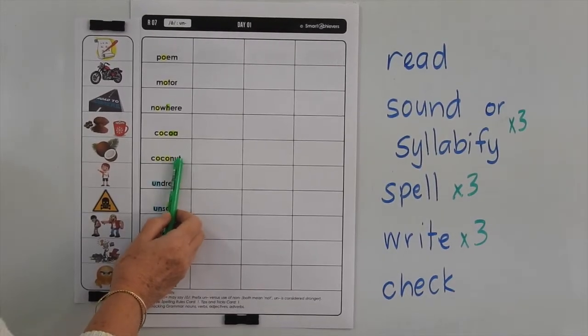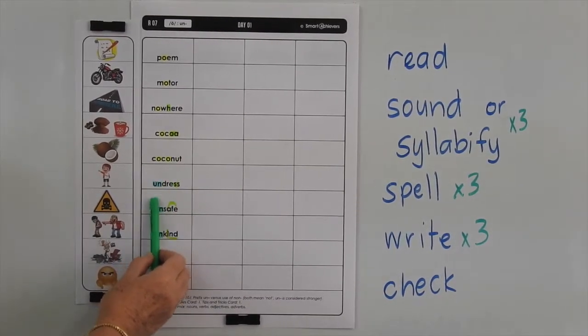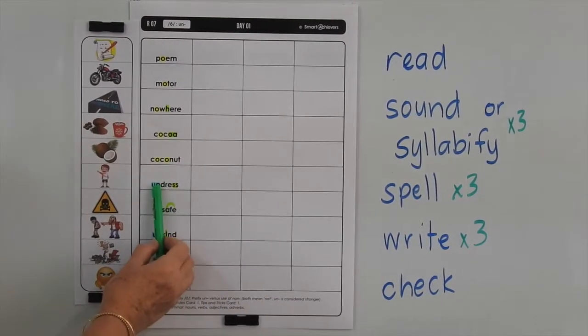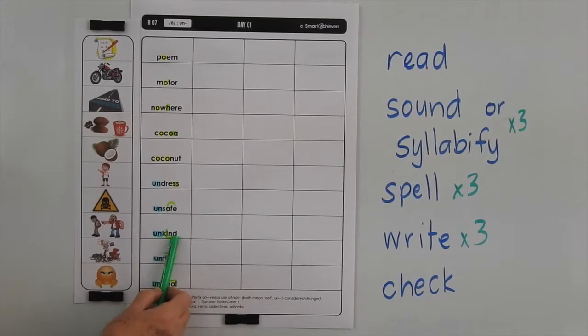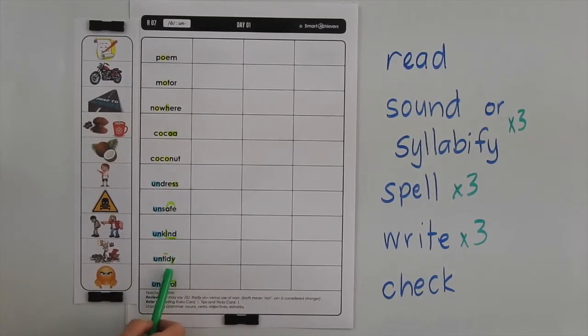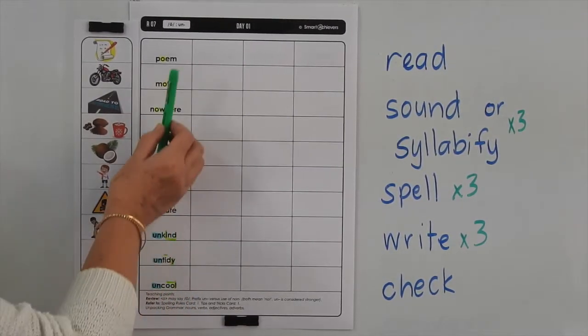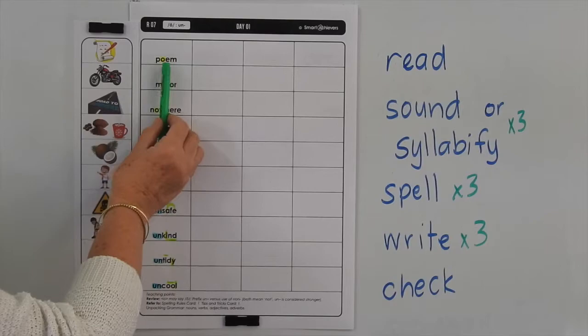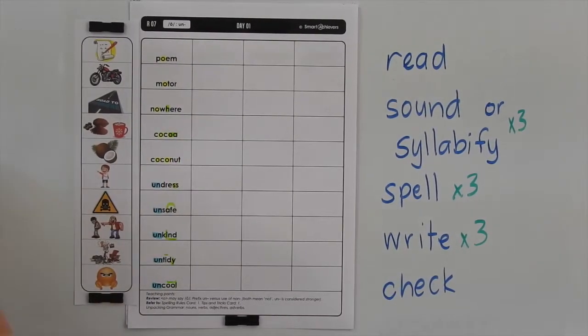Here we're looking at the prefix un in undress, unsafe, unkind, untidy and uncool. So let's go back and have a look at what's happening within these words.